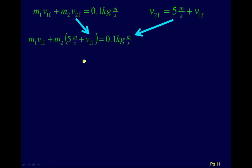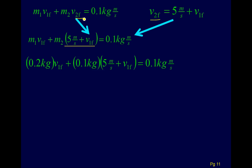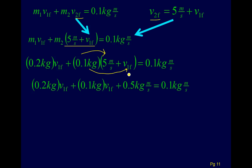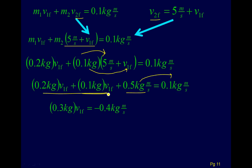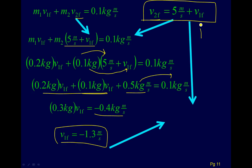Plugging V2 final from the relative velocity equation into the momentum equation, and substituting the masses, we distribute to get terms with V1 final and a constant. Combining like terms gives 0.3 times V1 final equals a number, and we solve for V1 final. Then we plug that back in to solve for V2 final. This approach works, though it's not the most pleasant algebra. Knight has a different approach you can also check out.